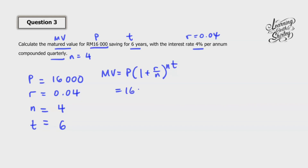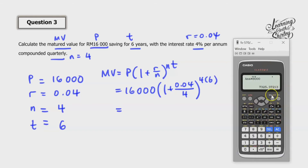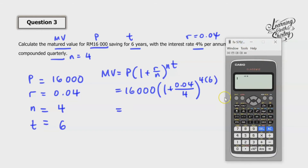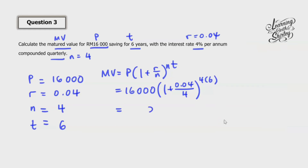Let's calculate with the calculator. We calculate 0.04 divided by 4, then plus 1, then to the power of 24 (since 4 times 6 is 24), then multiply with 16,000. So the answer is 20,315.75 RM. That's the answer.